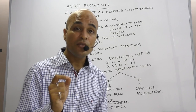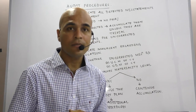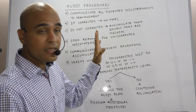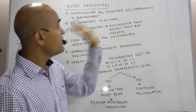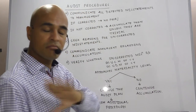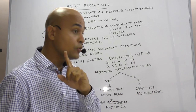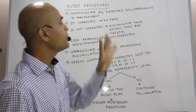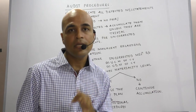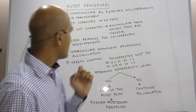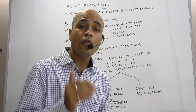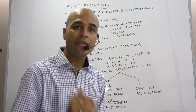When I say trivial, I mean negligible misstatements. I have communicated misstatements to management — if they correct it, there is no problem. If they do not correct it, the auditor will have to accumulate them unless they are trivial or negligible. The auditor should also seek reasons from management why they have not corrected the detected misstatements.